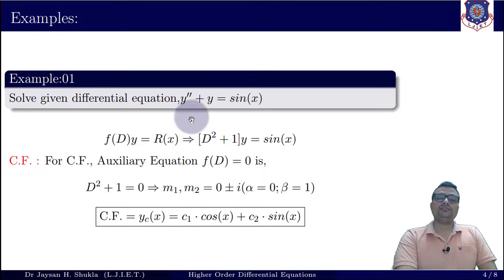My given equation is y'' + y = sin(x) and I want to find the general solution. So the first step is f(D)y = R(x). Considering it into operator form gives us D² + 1 y = sin(x). Now taking f(D) = 0 gives me D² + 1 = 0, which gives me two complex roots 0 ± i. This simply means that α = 0 and β = 1.